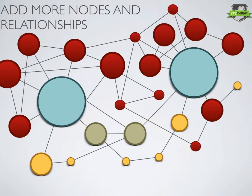If we zoom out a bit further from our single node, we can start to see more nodes joined together. The joins aren't just to one node — they can be joined to multiple nodes. And as you start to visualise it, those joins will crisscross and become quite complicated to look at.